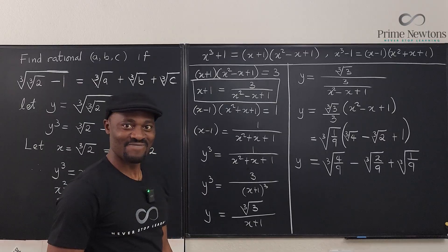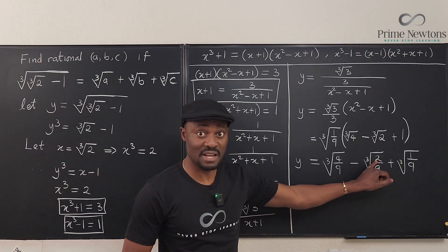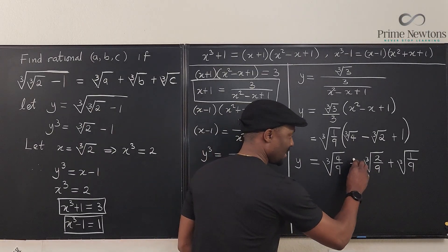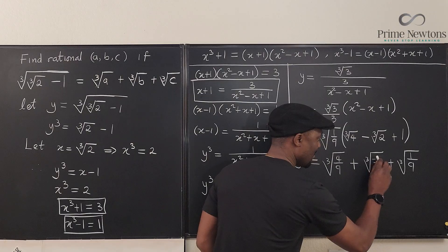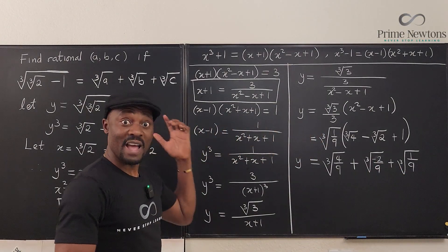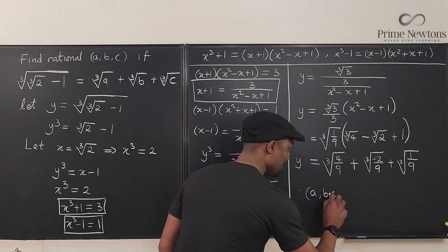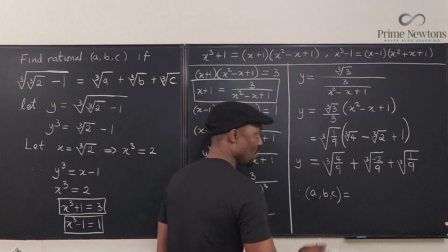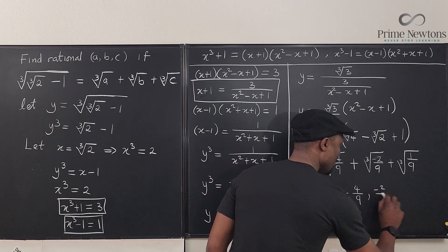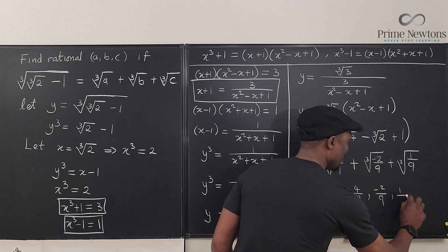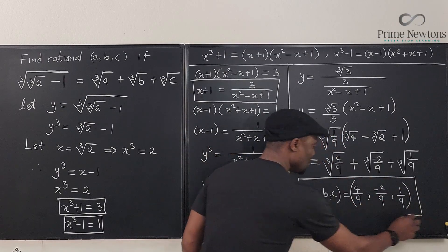We have answered the question. Therefore, the values a, b, c are: a = 4/9, b = −2/9, c = 1/9. Those are what we've been searching for.